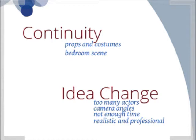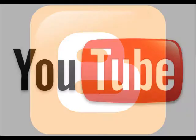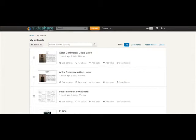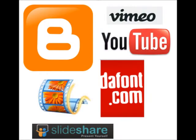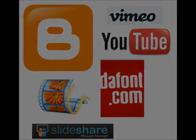I learnt that camera angles are extremely important and sometimes difficult to get right in order for them to fit with a particular genre and storyline. In my case, we did not have enough time to film all of the actors and shots that we needed in order to make our film look realistic and professional. I used a tripod in the process of constructing my film opening, which I used in order to make sure the camera was level and stable at all times. I also used other technologies such as Blogger, YouTube, Windows Movie Maker, Defont.com, SlideShare.net and Vimeo. All of these technologies were extremely useful in planning my media product and creating it.